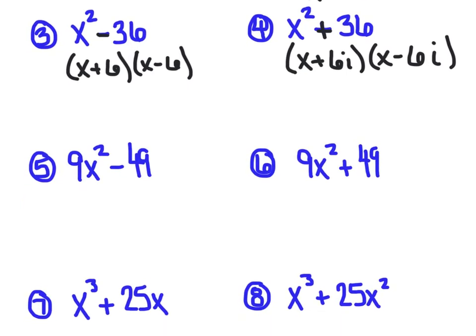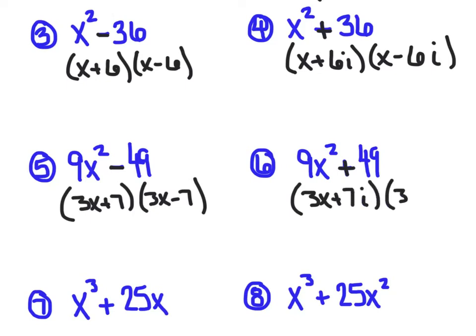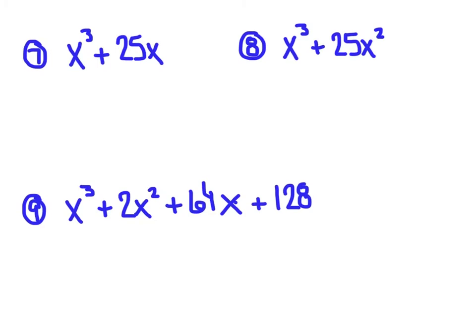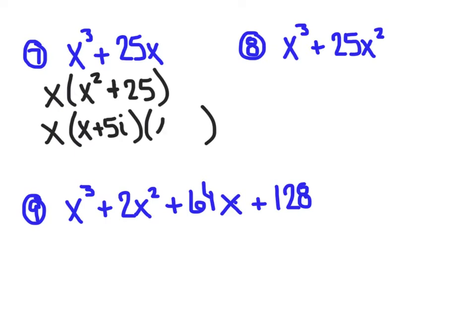We do have our minus sign, so we're going back to algebra one, x plus six, x minus six, but once we put that plus sign in there, now it's more of an algebra two topic, and we know now that it's going to be x plus six i and x minus six i. So hopefully you feel good about the pattern. If it's a minus thirty-six, then we're using real numbers, but if it's plus thirty-six, then we're using imaginary numbers or complex numbers. Here we go. We've got the difference of two perfect squares, so I'm thinking three x plus seven and three x minus seven, so we're using real numbers. Once they throw that plus sign in there, now I'm going to use imaginary numbers, and I'm thinking three x plus seven i and three x minus seven i.